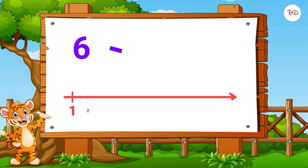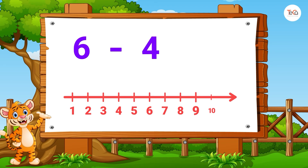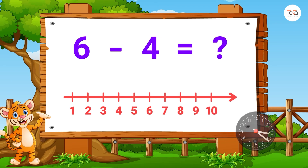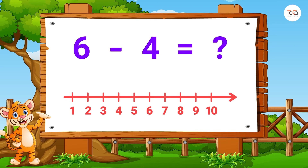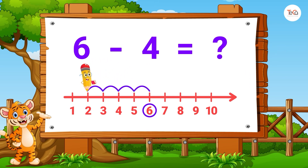Next, to find 6 minus 4, start from number 6. Then jump four numbers to the left. Here we stop at number 2. So, 6 minus 4 equals 2.